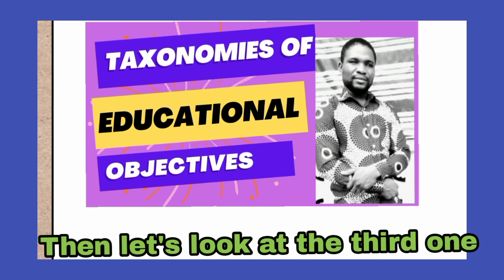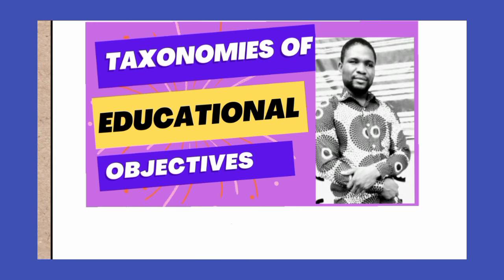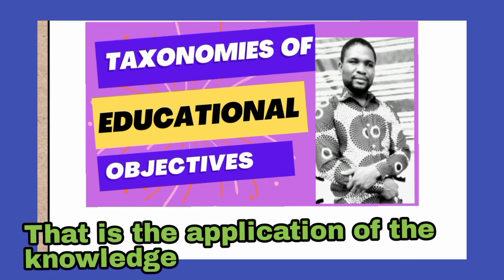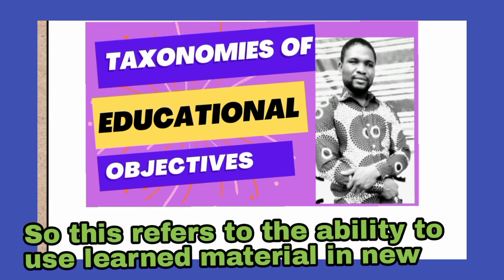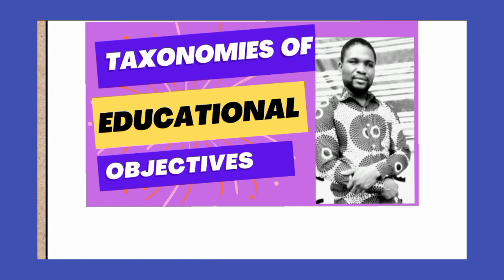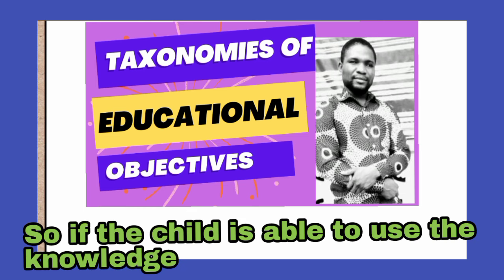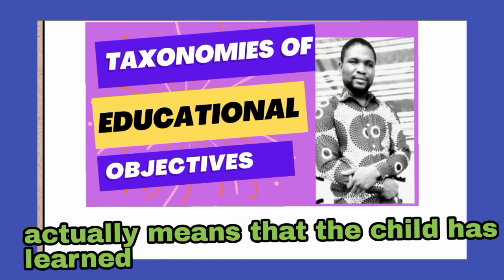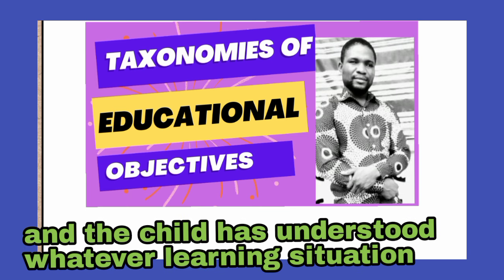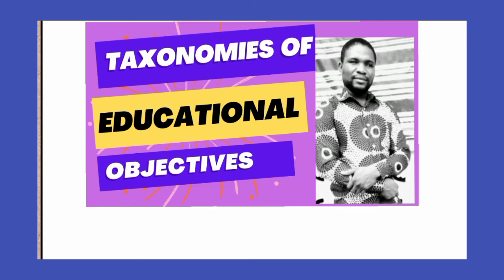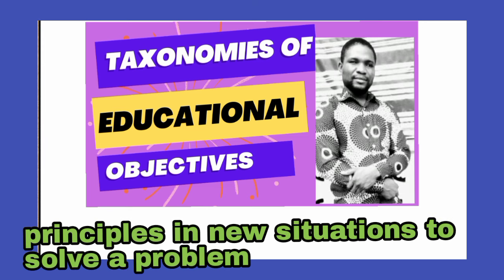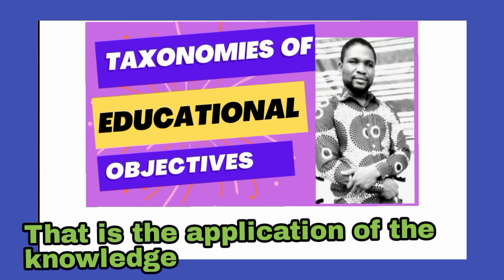The third heading is application. If the child has acquired knowledge and understands the material, the child should be able to use that knowledge in different situations when encountering a problem. Application refers to the ability to use learned material in new and concrete situations. The child should be able to use rules, methods, concepts, and principles in new situations to solve a problem.